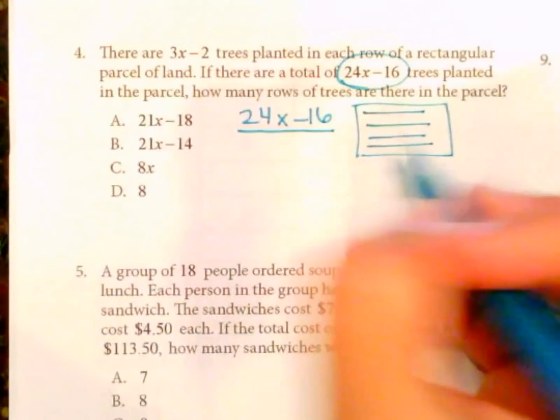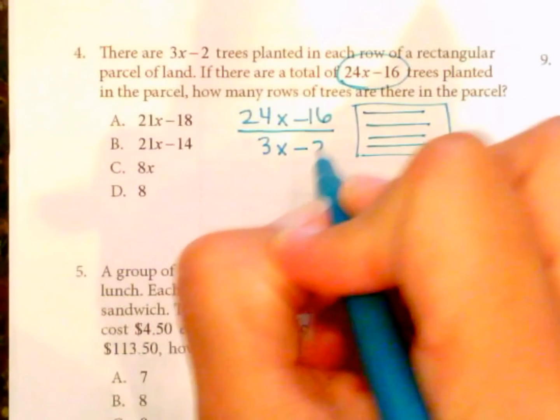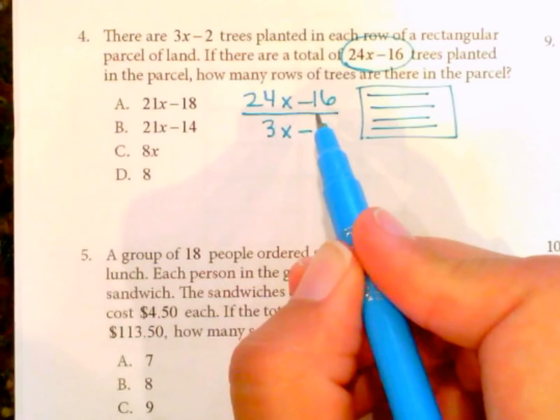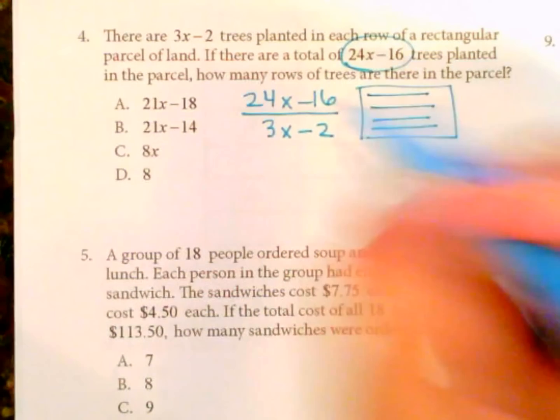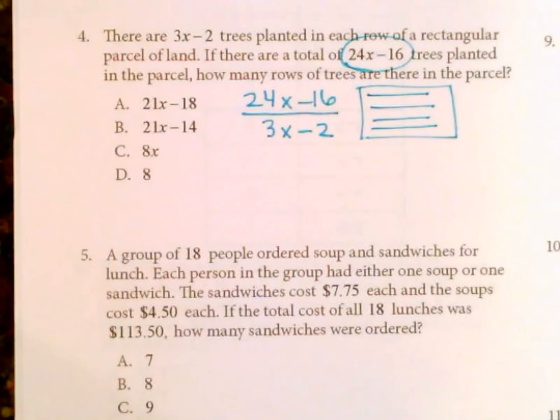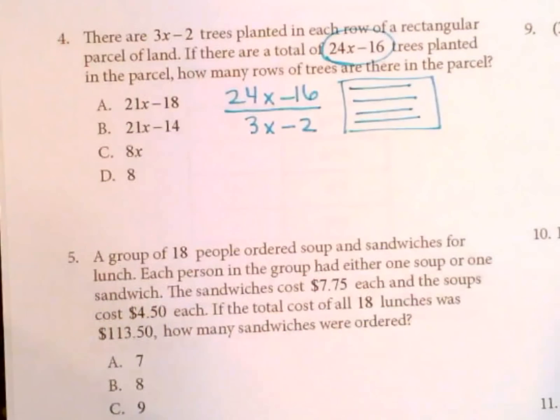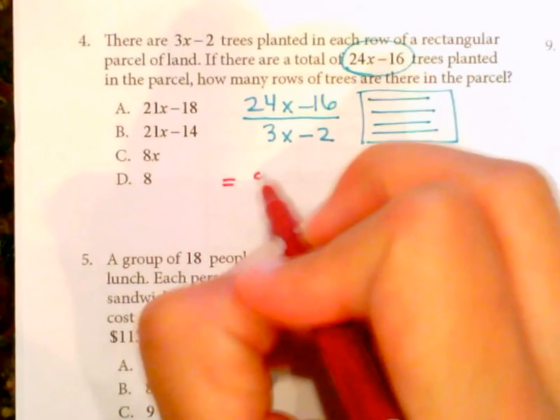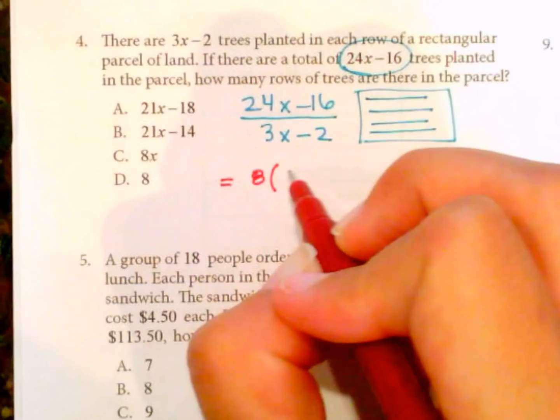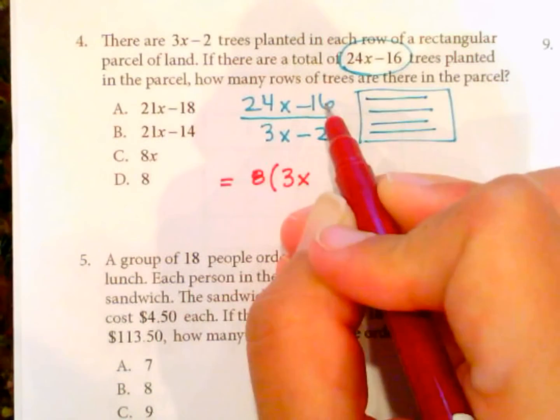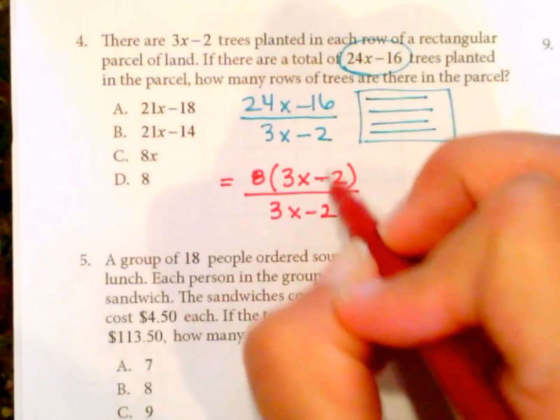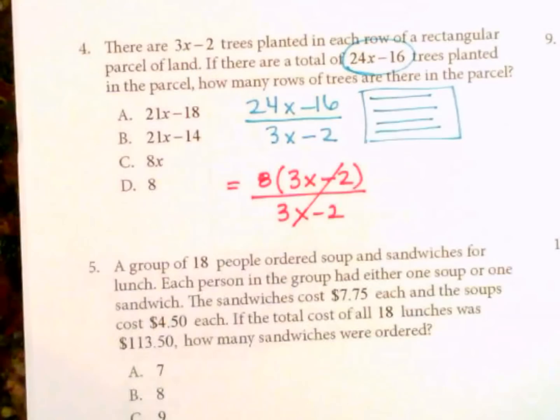Then we can find out how many rows there are here. Okay. So division again, just a reminder, a fraction is a division problem. So we're dividing 24x minus 16 by 3x minus 2. So what we're going to do first is factor here. So 24x minus 16. What can we factor out of 24 and 16? What do they have in common? An 8. So we can divide out an 8 from 24x. That'll leave us with 3x. And dividing an 8 from minus 16 is going to leave us with minus 2. And now we can see how lovely we get to cancel.